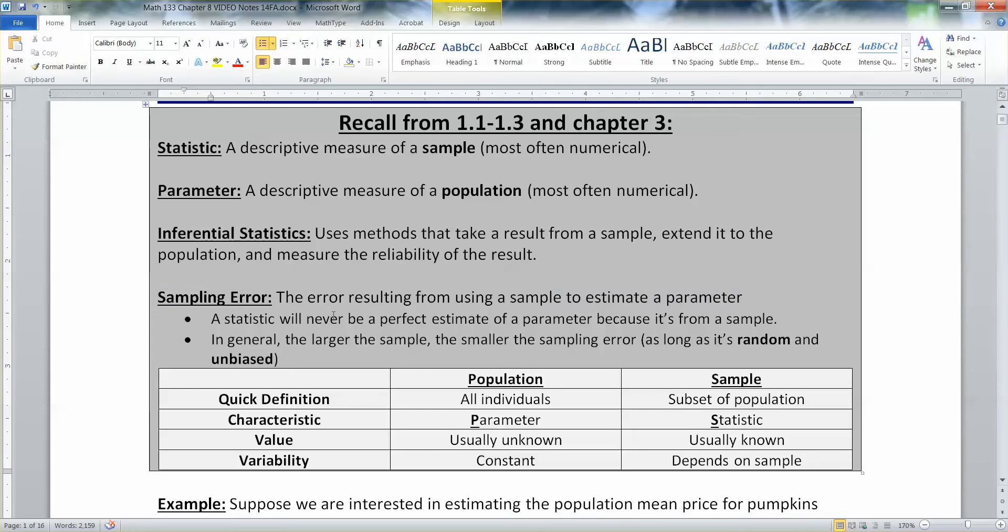Sampling error means that, hey, my sample is not perfect. Therefore, my statistic will not be perfect. It can't be. It's impossible. Inherently, because you're not looking at the entire population in your sample, then your statistic will never be a perfect estimator of your parameter. But it should be close.